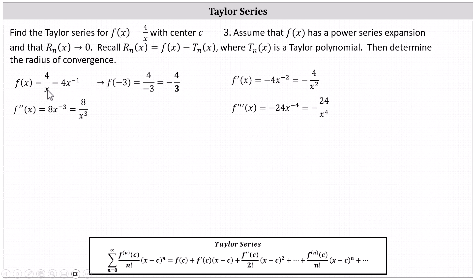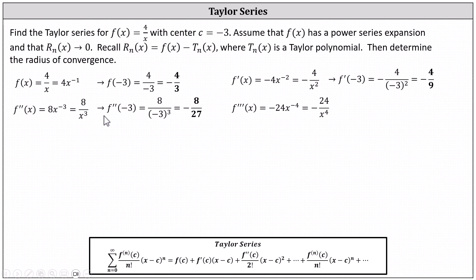f of negative three is negative four thirds. f prime of negative three is negative four ninths. f double prime of negative three is equal to negative eight twenty-sevenths. And f triple prime of negative three is equal to negative 24 divided by 81. Now we'll determine the first four terms in the Taylor polynomial, which we'll use to write the Taylor series.